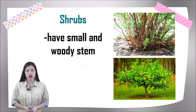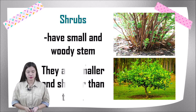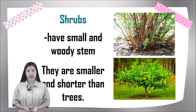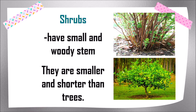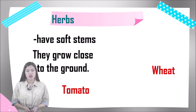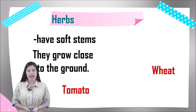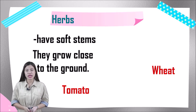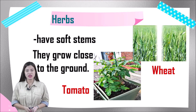Next, we have shrubs. Shrubs have small and woody stems. They are smaller and shorter than trees. Example: the lemon tree. Next, herbs. Herbs have soft stems and they grow close to the ground. Examples are tomato and wheat. They are very short plants.